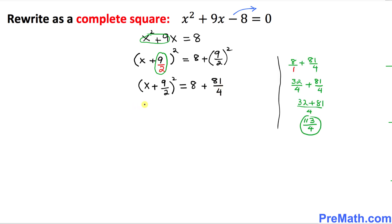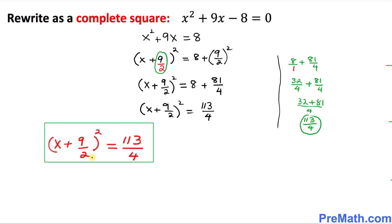Our final step: x plus 9 over 2, squared, equals the sum of the whole number and this fraction. This simplifies to 113 divided by 4. So our complete answer turns out to be x plus 9 over 2, squared, equal to 113 over 4.